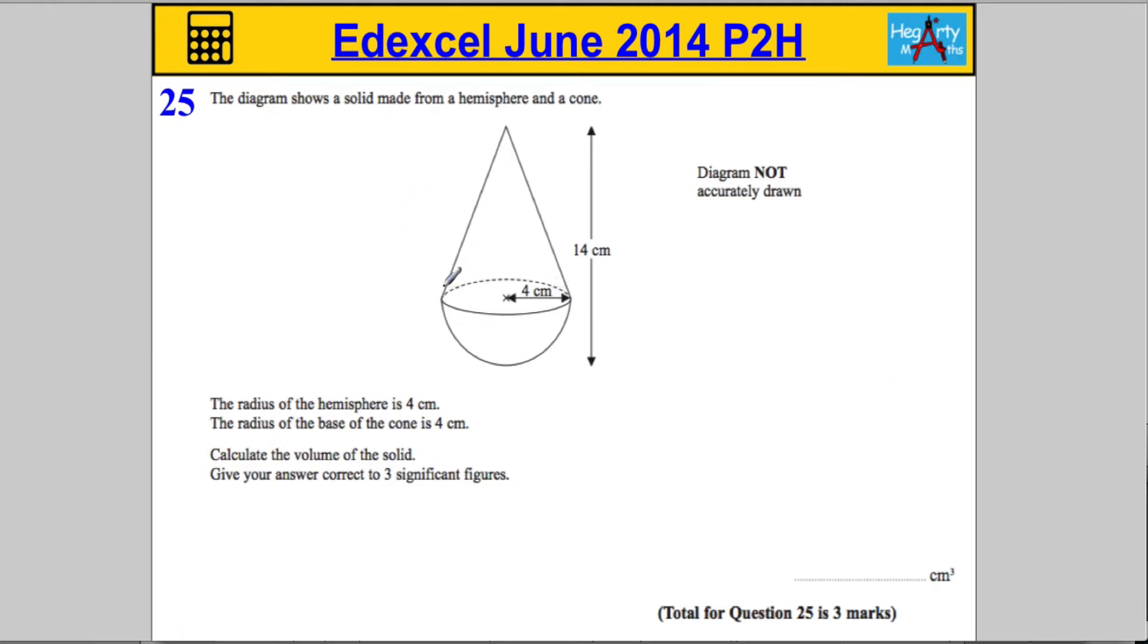Now, this particular shape, we don't have a formula for a volume, but we do have the formula for volume of a cone, which I'm going to write down. It's on the front of the paper, so the volume of a cone is normally found by doing one-third times pi times r squared times h. That's the volume of a cone.